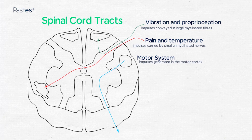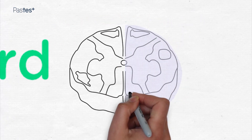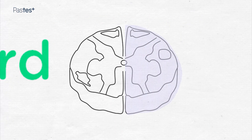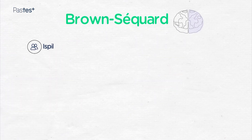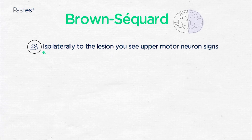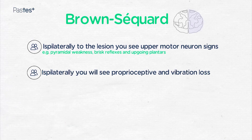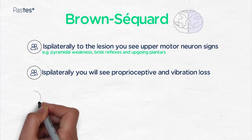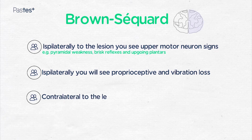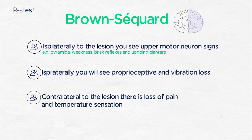We can use this knowledge to understand some well-known spinal cord syndromes. Brown-Séquard syndrome is a hemisection of the spinal cord. Because of the way the tracts decussate, ipsilaterally to the lesion you see upper motor neuron signs — for instance, pyramidal weakness, brisk reflexes and up-going plantars. Also ipsilaterally, you see proprioceptive and vibration loss due to dorsal column involvement. Contralateral to the lesion, there is a loss of pain and temperature sensation because of the way those fibres decussate upon entering the spinal cord.